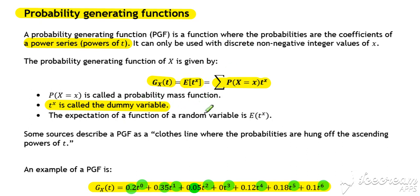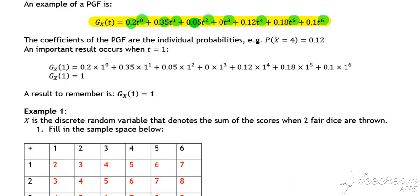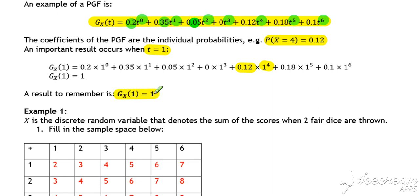Just to clarify: the probability that x equals four for a particular probability distribution would be represented in our probability generating function as 0.12 multiplied by t to the power of four — in this case referring to the situation when t equals one. An important fact about probability generating functions is that if t equals one, then it will always be the case that the probability generating function sums to one.